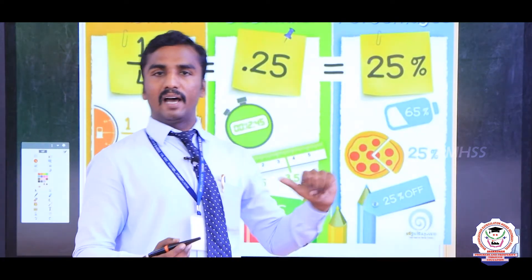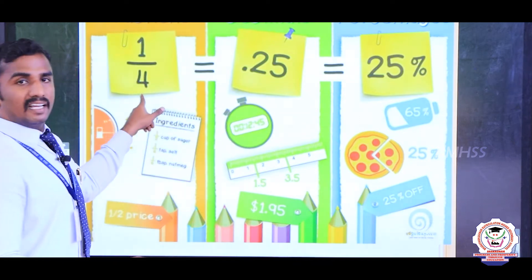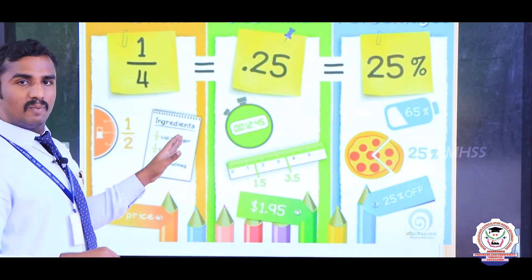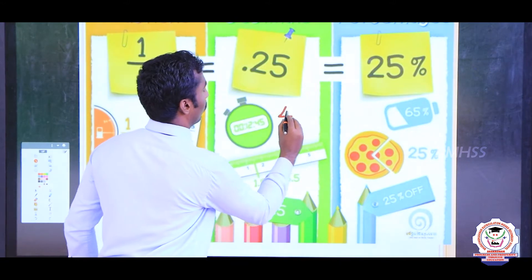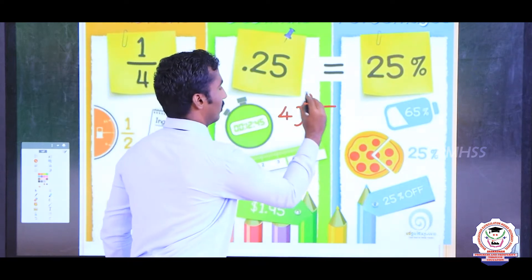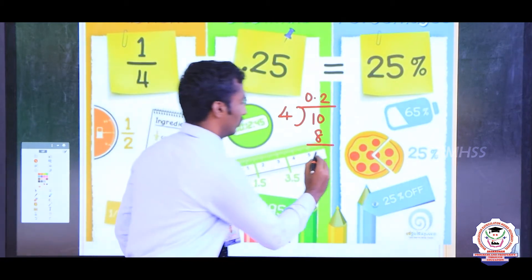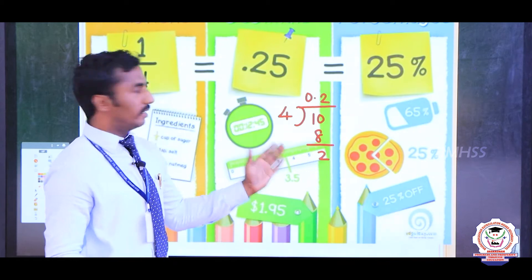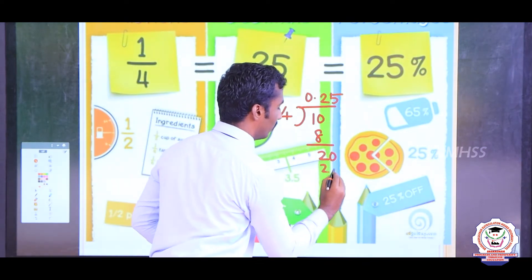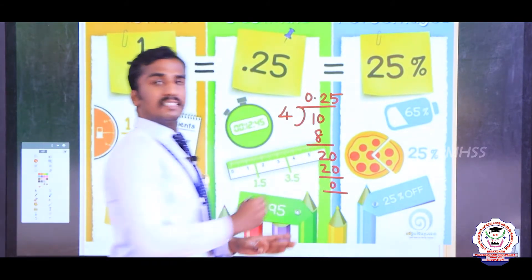One more example of decimal value: 1 by 4. 1 by 4 means 0.25. Since 1 is not divisible by 4, we put 0.0; then 20 divided by 4 gives 5, so 1 by 4 equals 0.25. This 0.25 is the decimal value.